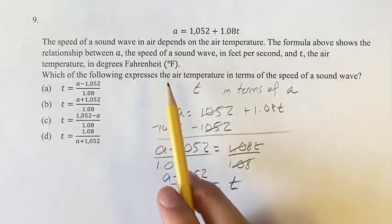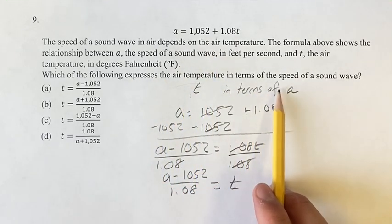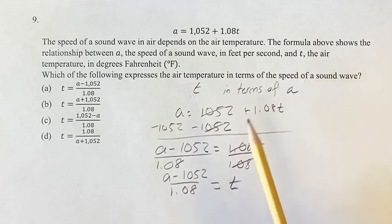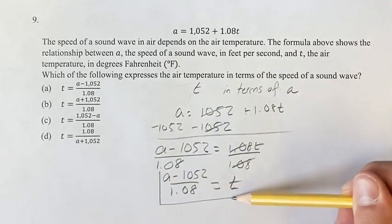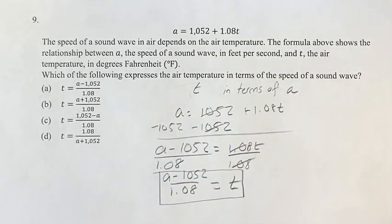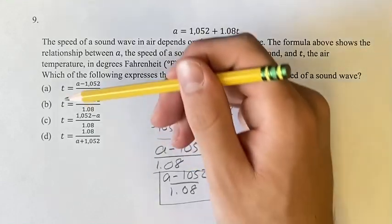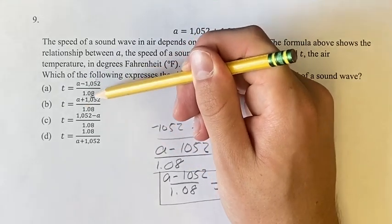And this is expressing T in terms of A. This is expressing the air temperature in terms of the speed of the sound wave. This is your final answer. And so we have T equals A minus 1052 over 1.08.